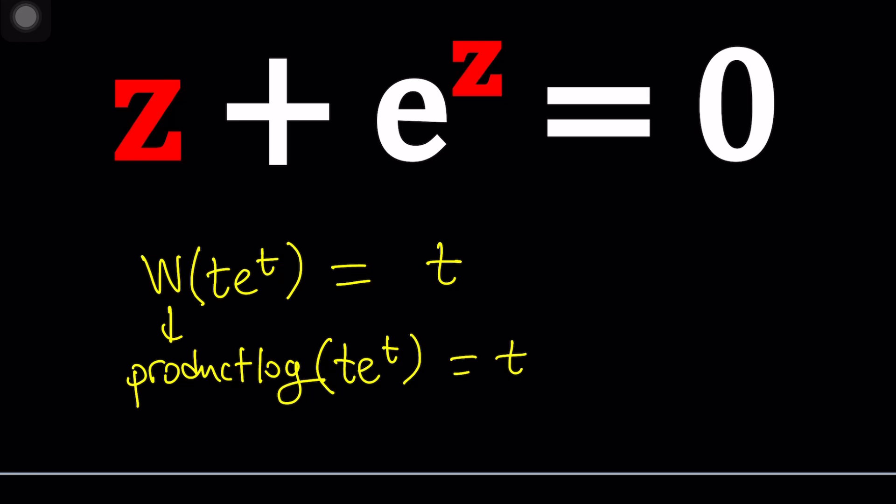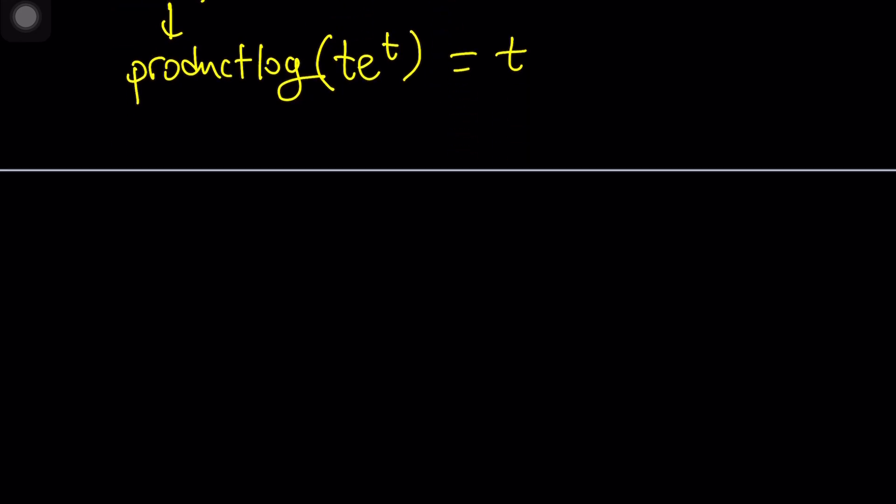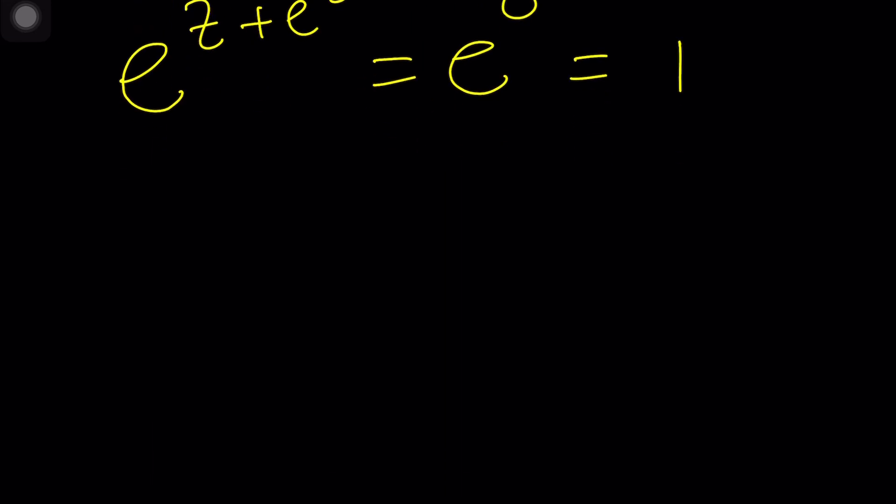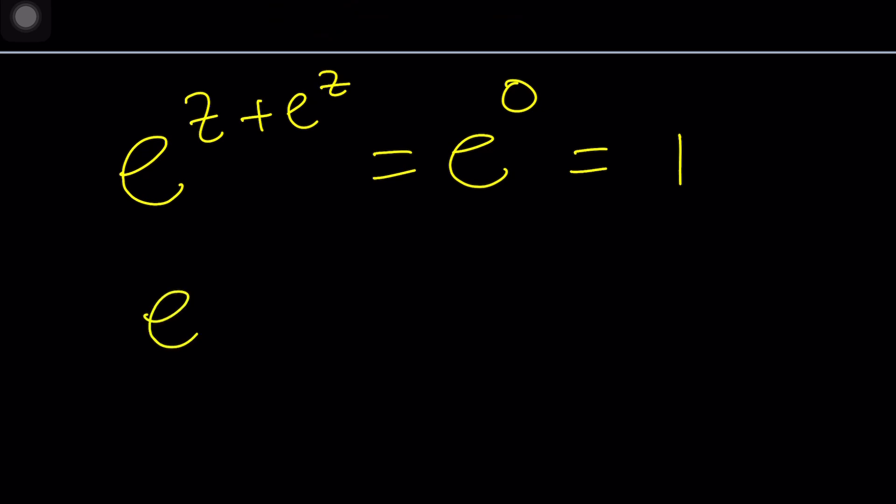There's probably a couple different ways to go about it. One way that I can see is doing E to the power of both sides. Let's go ahead and do E to the power of both sides. This is going to be E to the power of that equals E to the power of Z. Now, why am I doing it? Because this is going to give us one. And then we're going to get something interesting. E to the Z, multiply by E to the E to the Z equals 1.